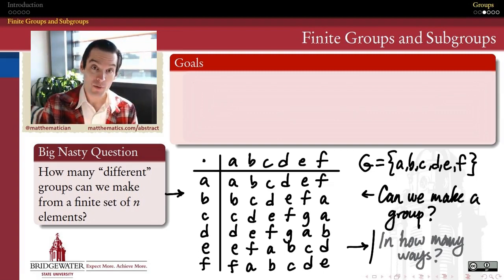If you and I both did this task, would we necessarily get the same group? What does the same even mean in a context like this? So those are the big nasty questions that we want to get to.